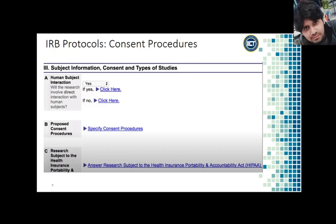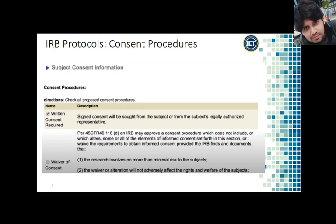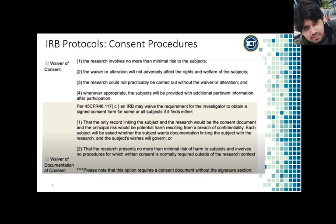One of the most important elements of IRB approval is consent — that was one of the things created by the Belmont Report. If we are doing any interaction with our human subjects, we definitely need to think about consent procedures. On the consent information page, we first need to indicate what kind of consent we will receive. Most commonly this will be written consent required, where participants sign or digitally sign a consent form to start the study. But in some cases, a waiver may be obtained.